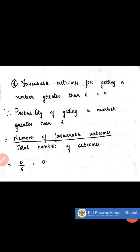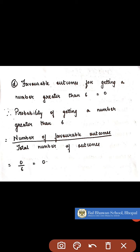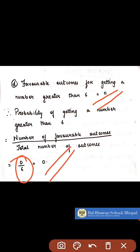In the last part, they have asked you to find a number which is greater than 6. But when a die is rolled, you never get a number which is greater than 6. So its favourable outcome is 0. Therefore, the probability of getting a number greater than 6 is 0 by 6, which equals 0.